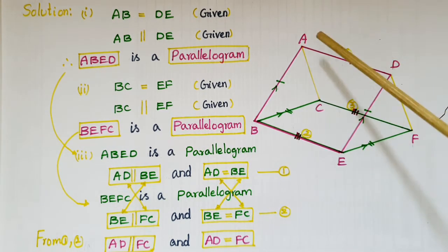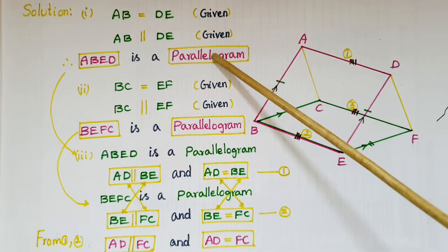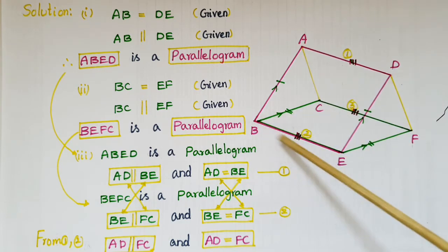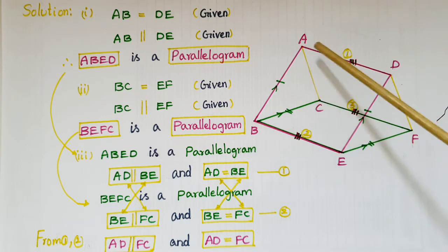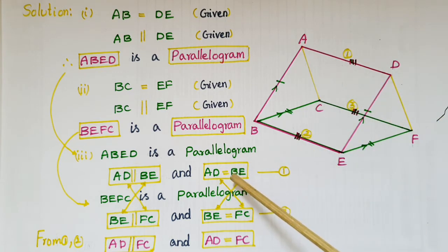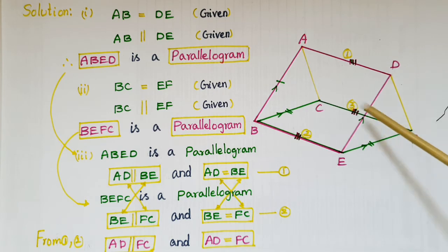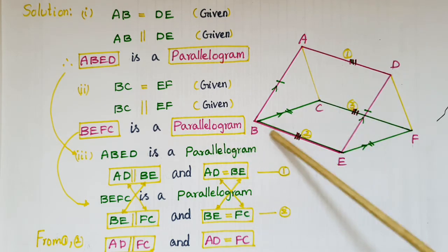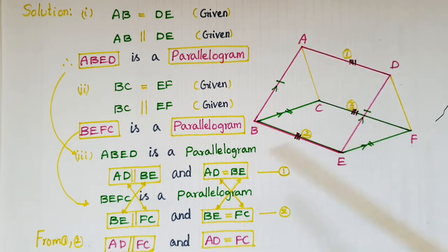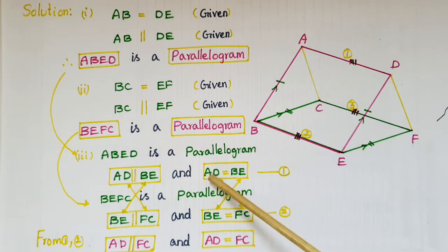Third, we have to prove that AD is parallel to CF and AD is equal to CF. AD is a side of parallelogram ABED, and CF is a side of parallelogram BEFC. Since ABED is a parallelogram, AD is parallel to BE and AD is equal to BE — opposite sides of a parallelogram are parallel and equal. Since BEFC is a parallelogram, BE is equal to CF and BE is parallel to CF.